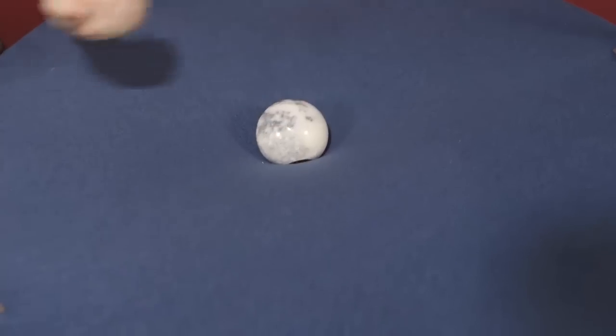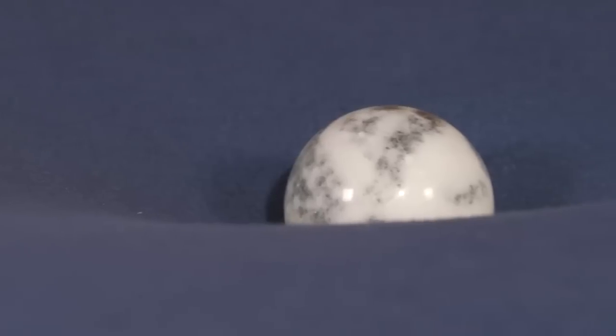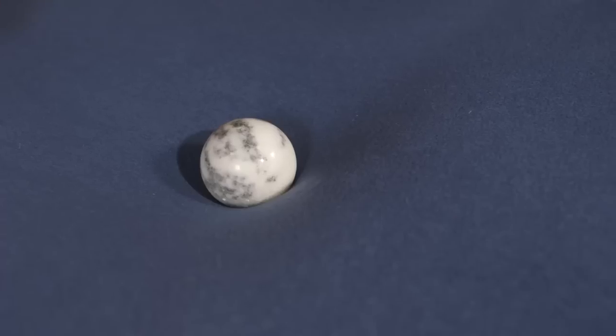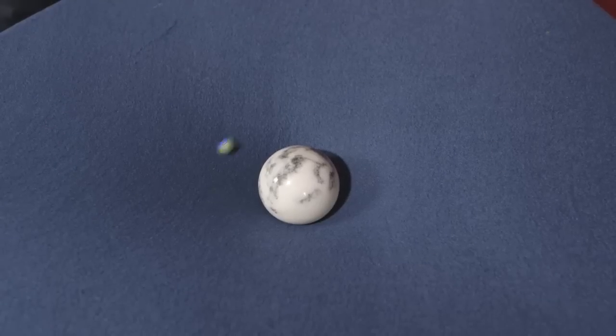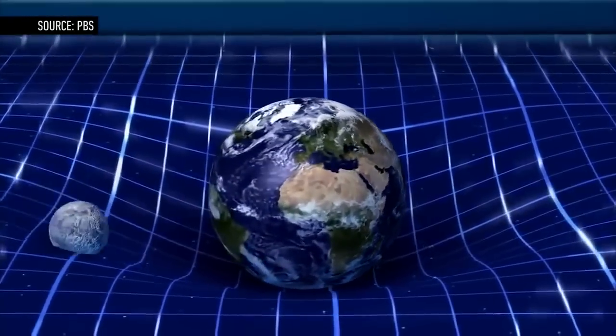But if you place a bigger object with more mass on the blanket's surface, it warps the overall shape much more significantly and affects other passing objects. This is basically how gravity works in our universe.